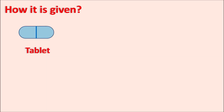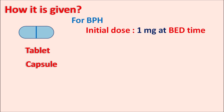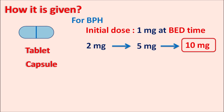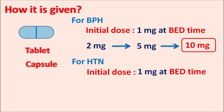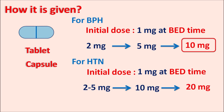Terazosin is given as tablets or capsules, and the dose depends on the clinical indication. For benign prostatic hyperplasia, it is started at a low initial dose of 1 mg given at bedtime — particularly to avoid first-dose effects. The dose can then be increased to 2 mg, then 5 mg, and finally up to 10 mg, which is the effective dose for BPH, though it can be increased up to 20 mg if needed. For hypertension, it is similarly initiated at 1 mg at bedtime and slowly escalated between 2 to 5 mg, then 10 mg, and up to 20 mg given once daily at bedtime.